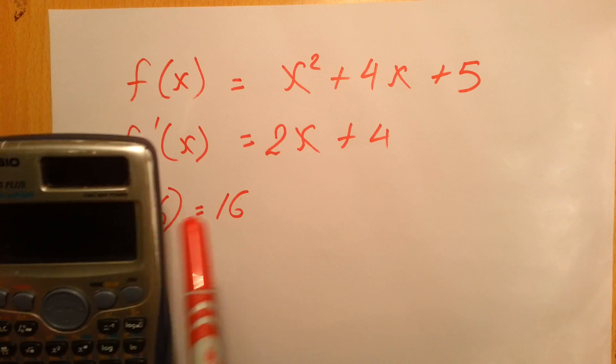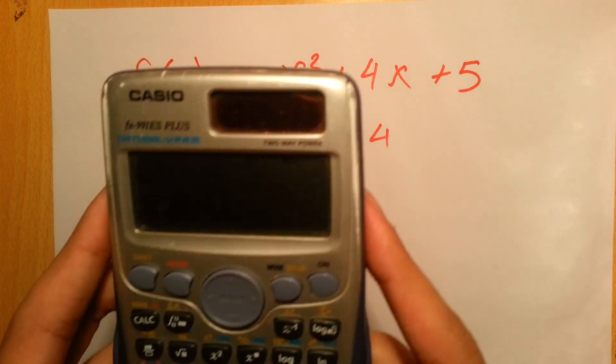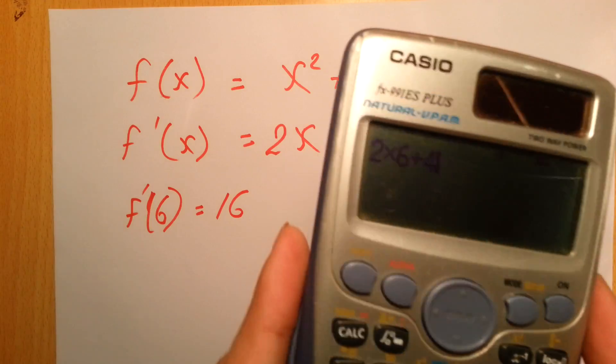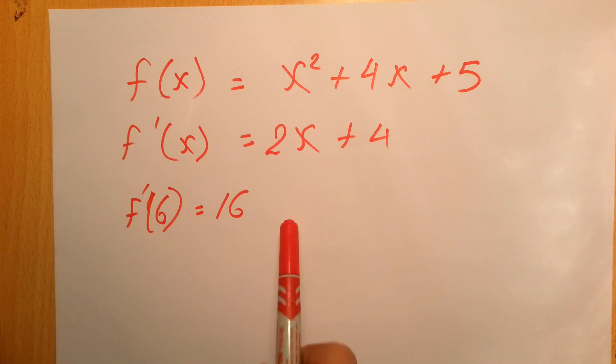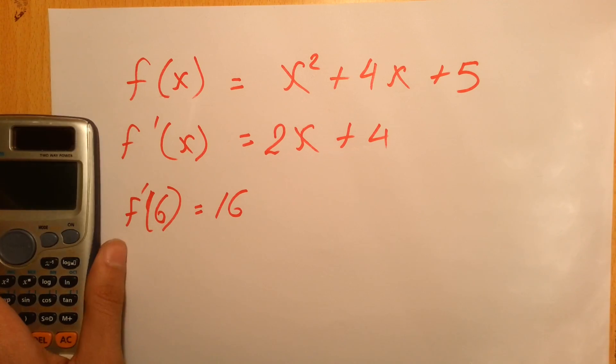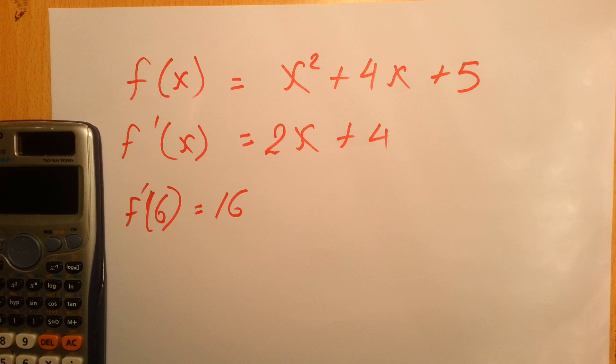So the derivative at x equals 6 is 16. How do we check that? We plug 6 into this one. So 2 times 6 plus 4 is 16. This shows that you did a good job.